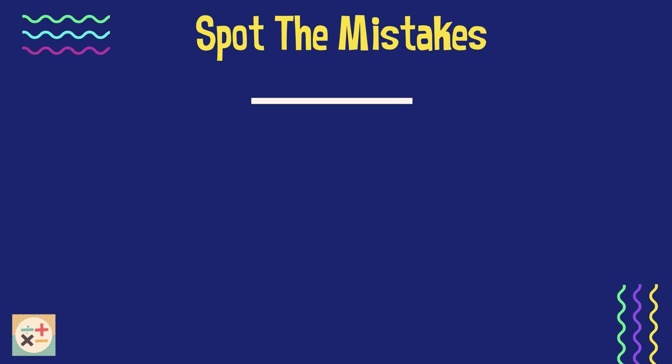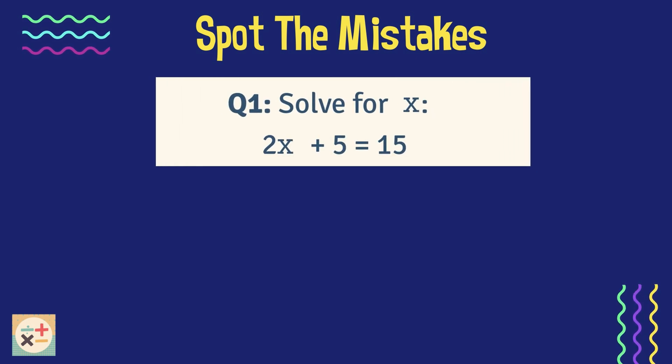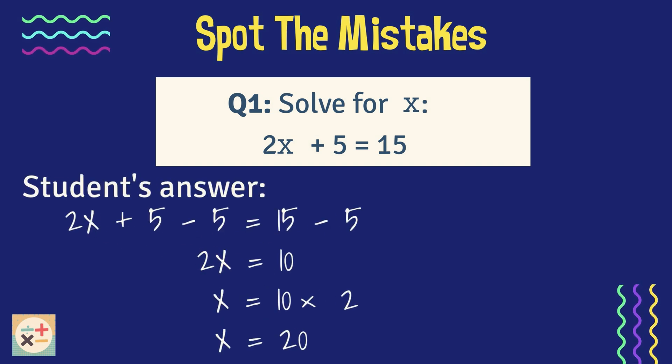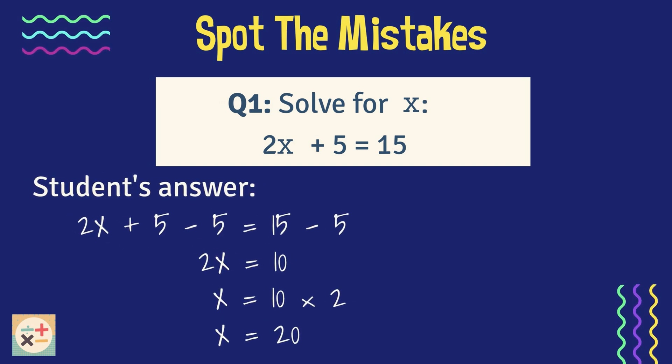Let's look at question 1. The student has been given an equation to solve: 2x plus 5 equals 15. The student has answered this question incorrectly. Have a look at the student's calculations to see if you can spot where they have gone wrong. Pause the video if you need to.